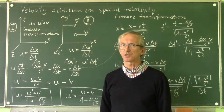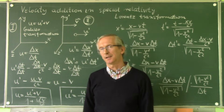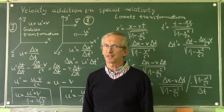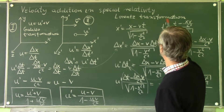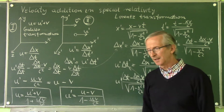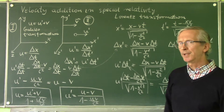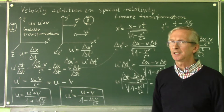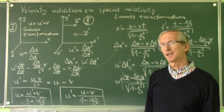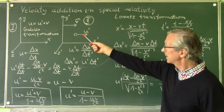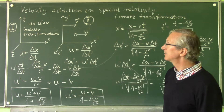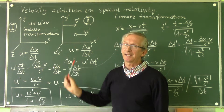We should use a transformation which complies with the main postulates of the special theory of relativity. This transformation is called the Lorentz transformation. I wrote here two equations describing this transformation. It is a special case of Lorentz transformation, where this equation describes such a situation where the second frame of reference is moving with constant speed in the direction of the axis x.